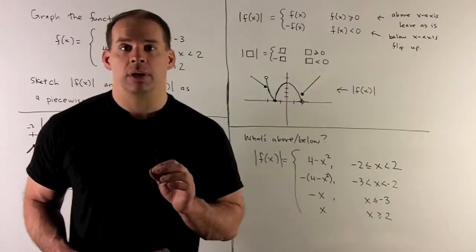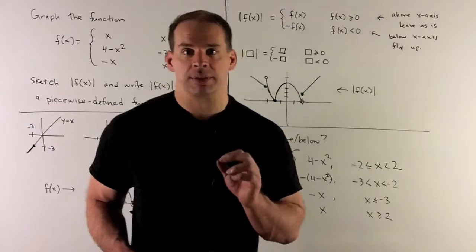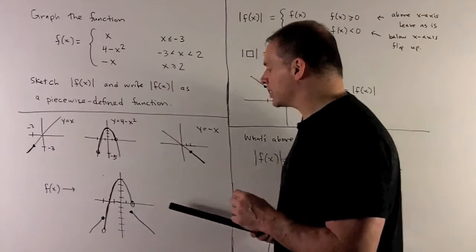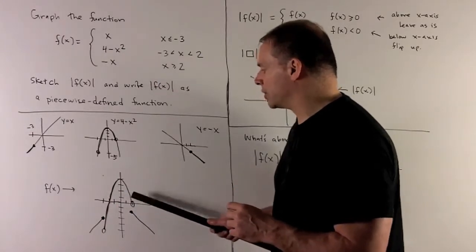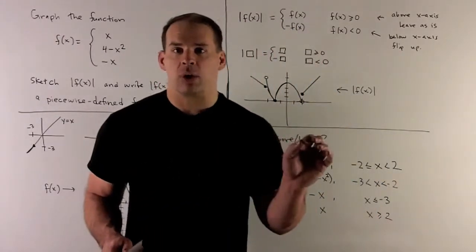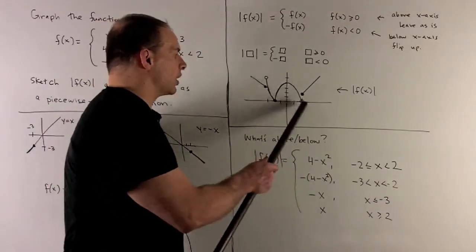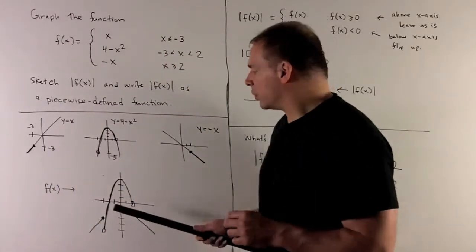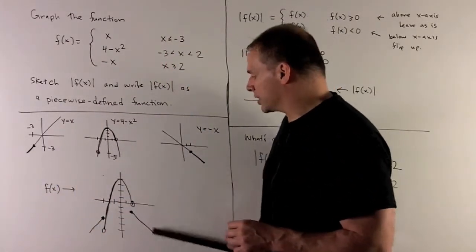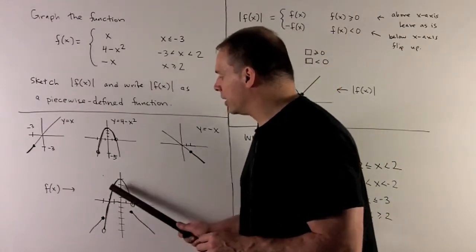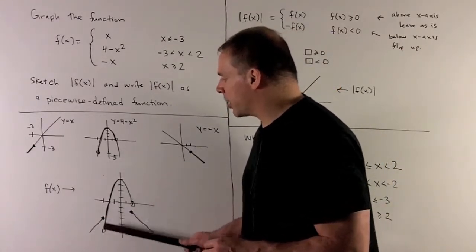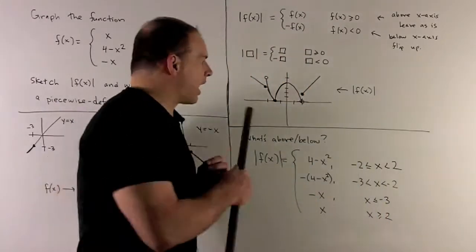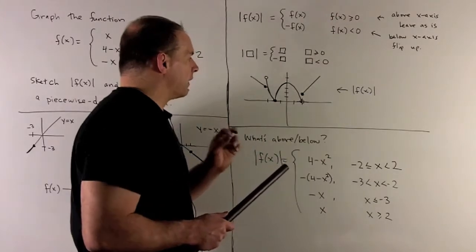Applying this rule to our function: the parts above the x-axis — the parabola between minus 2 and 2 — are brought over as-is. The parts below the x-axis are flipped up: the left line piece flips up, the right line piece flips up, and the portion of the parabola outside minus 2 to 2 flips up. That gives us the graph of the absolute value of f(x).